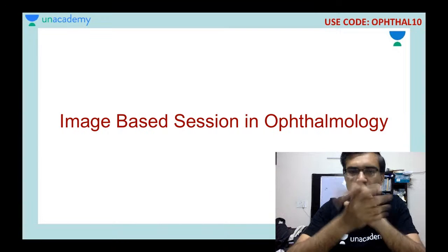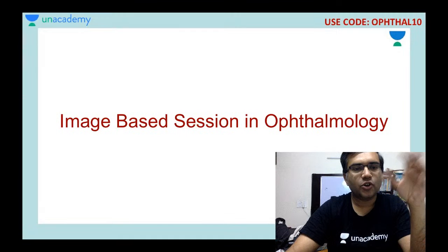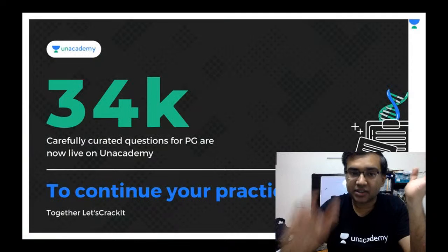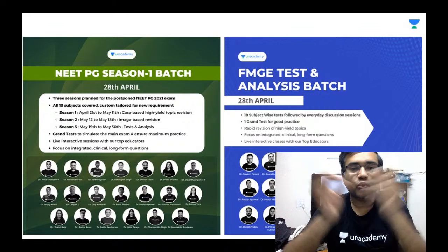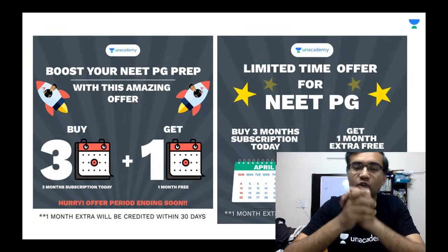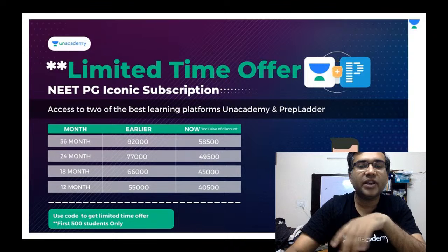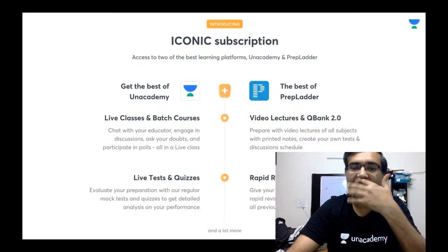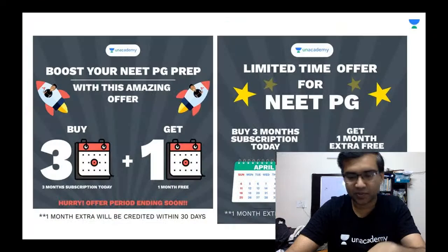If you want to subscribe for the Unacademy Plus program, download the Unacademy learning app from the iOS Store and Play Store. Use my code 'ophthalmology10' to unlock the platform and practice more than 34,000 questions. You can enroll for the NEET PG or FMGE test batch, with offers including one month extra free and an iconic subscription bundling Unacademy and PrepLadder.